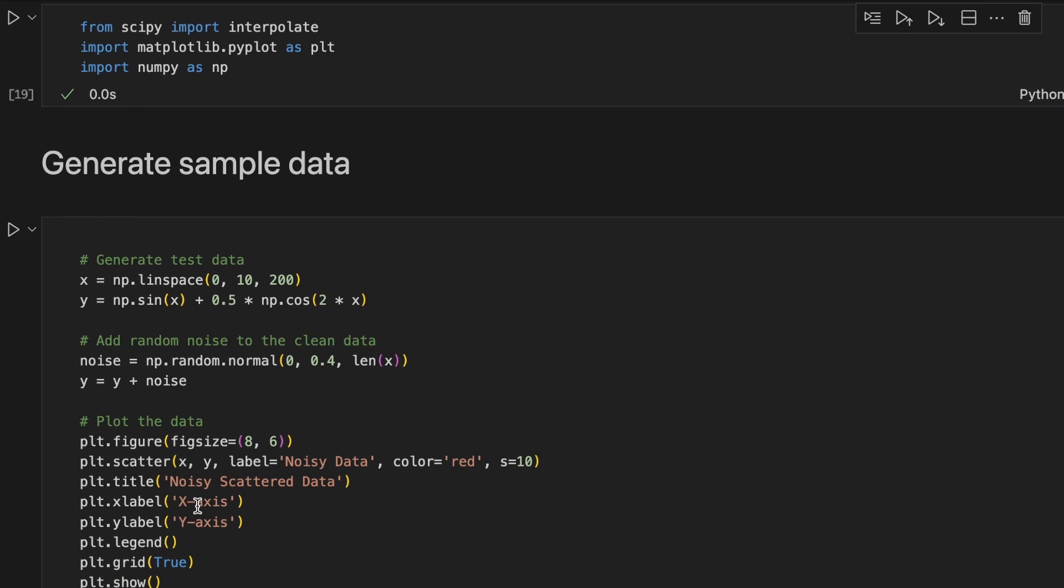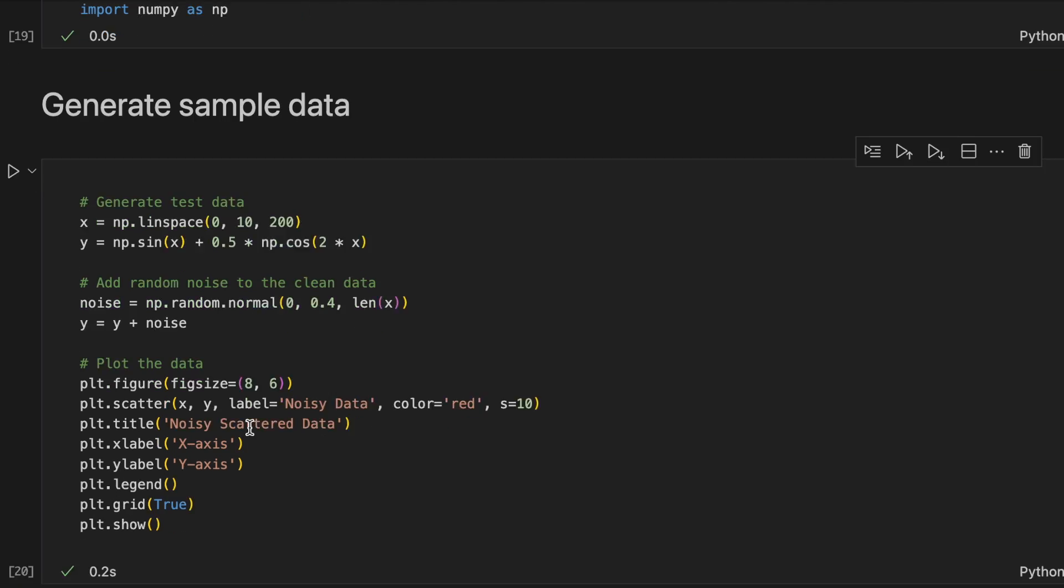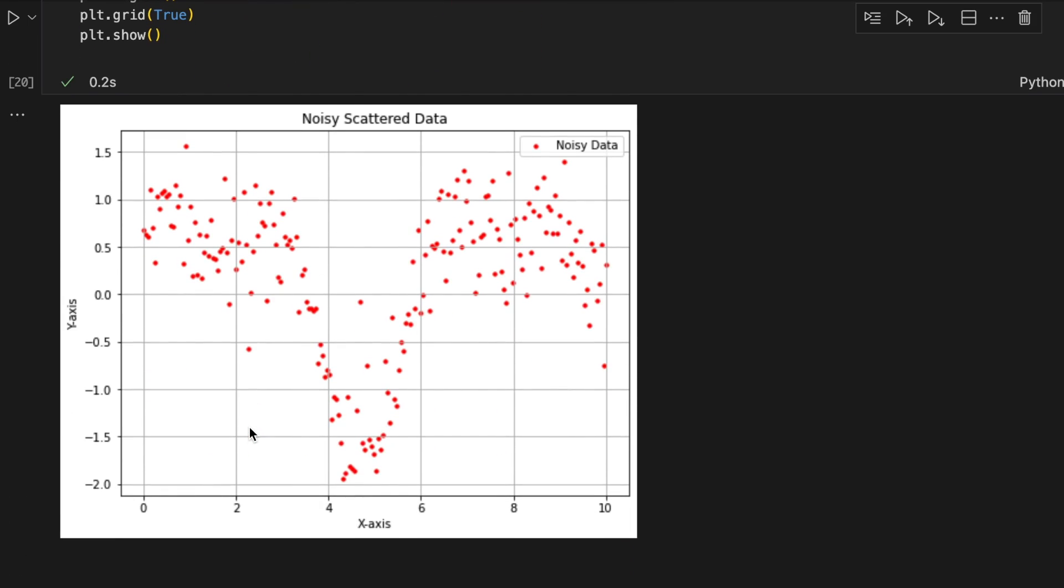Next, we generate sample data. Here we generate x and y data and add some noise and visualize it in a plot. So here is the target scattered data for us to fit with spline interpolation.